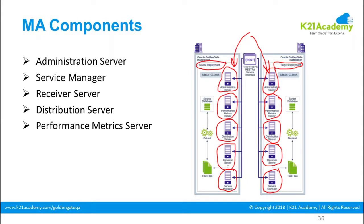You define the local trail path in the distribution server. The distribution server distributes data over the TCP/IP network. Whatever was previously being done by the data pump process — defining the trail path and everything — is now configured in the distribution server.